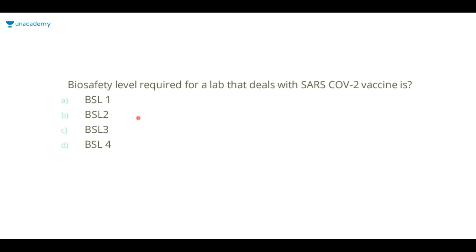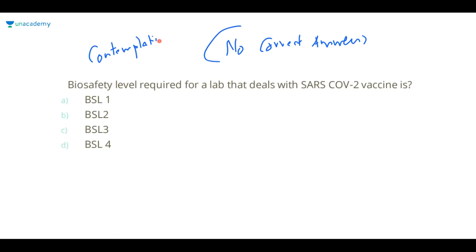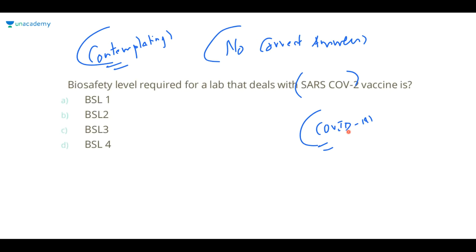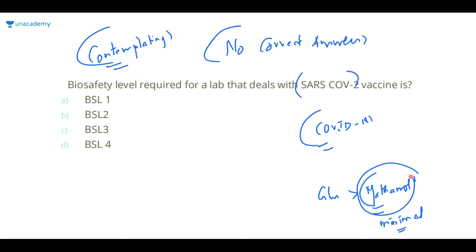There is no correct answer because the world is still contemplating. Some people said they are asking about COVID-19 lab safety. If it was methanol instead of ethanol and glutaraldehyde instead of acetaldehyde, I would still choose glutaraldehyde over methanol — because even though methanol is dangerous, it can be used for minimal fixation when ethanol is unavailable. Glutaraldehyde is less common than methanol, so I'll choose glutaraldehyde.